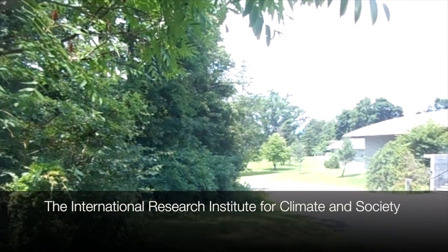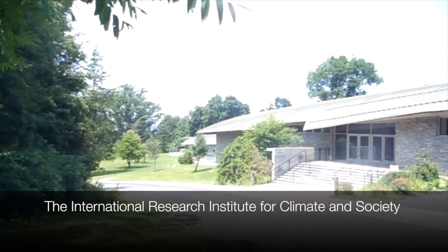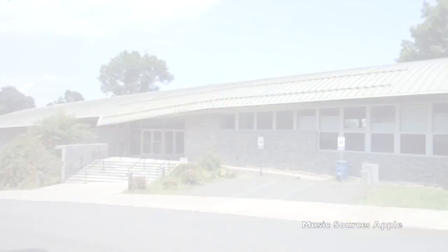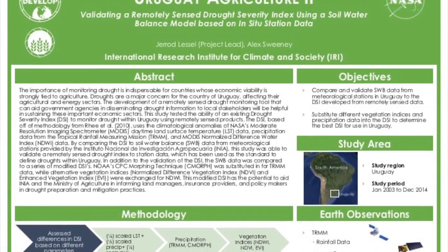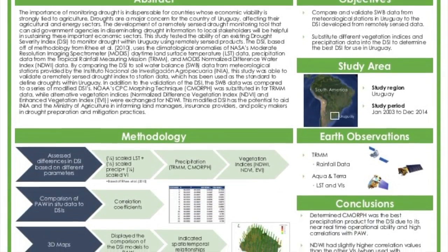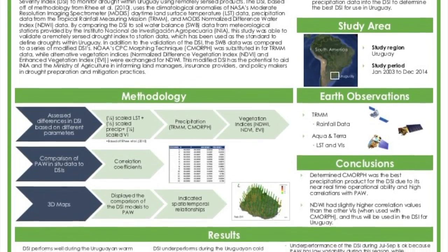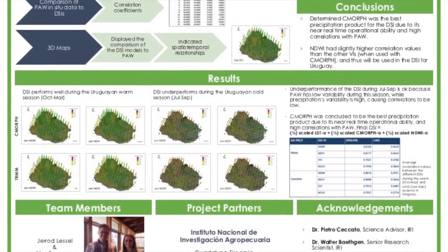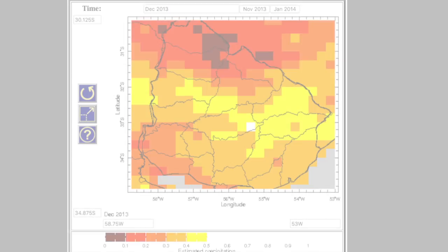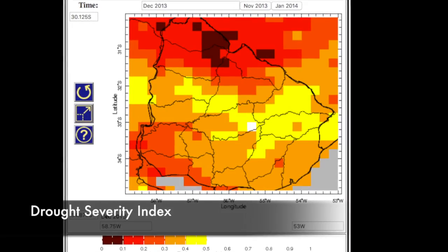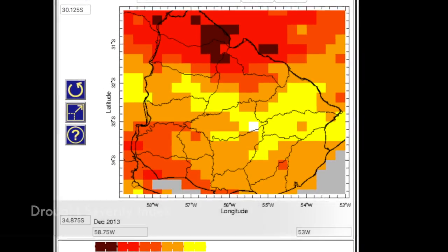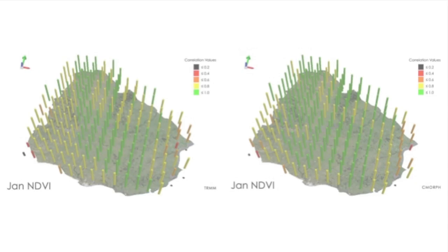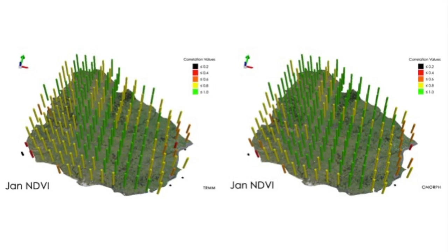Here at the International Research Institute for Climate and Society NODE, we partnered with the Instituto Nacional de Investigación Agropecuaria in Uruguay for this final term of the Uruguay Agriculture Project. The preceding project terms produced a drought severity index tool based on the methodology of RIA et al. 2010 and compared it to remotely sensed drought indices as well as in-situ soil water balance data.